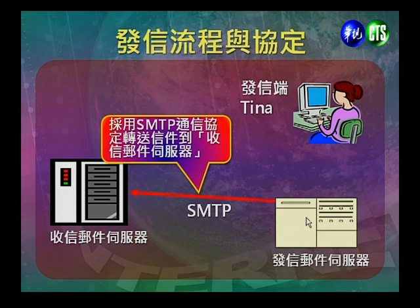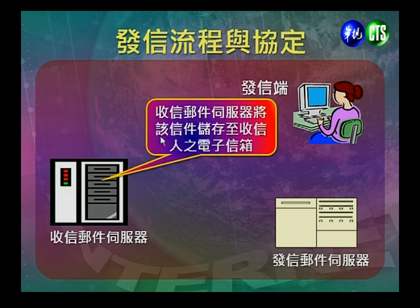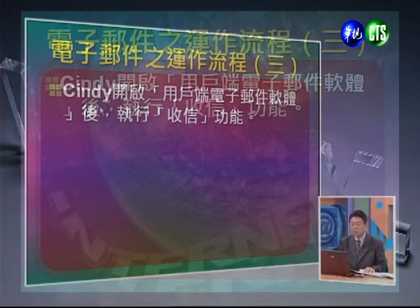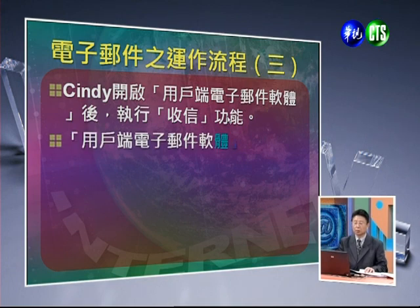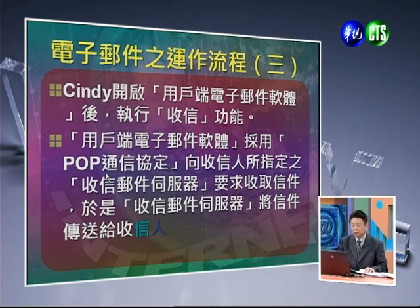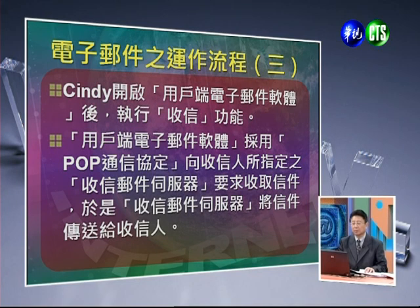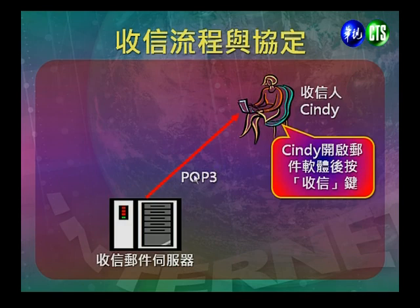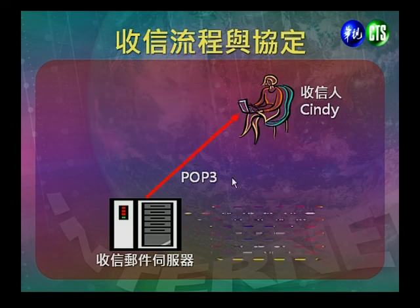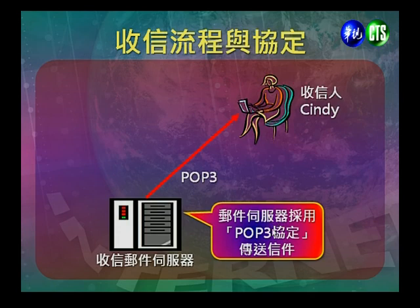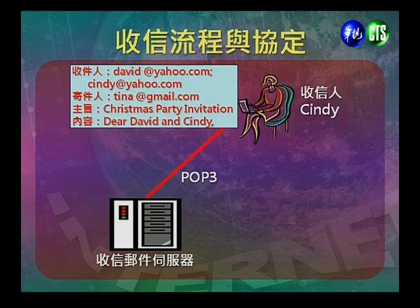Tina透过SMTP通信协定传送信件到发信邮件伺服器，发信邮件伺服器再透过SMTP把这封信传送到收件邮件伺服器，收件邮件伺服器把信件储存至David和Sandy的电子信箱。接着Sandy开启用户端电子邮件软体执行收信功能，用户端采用POP3通信协定向收信邮件伺服器要求收取信件，收信邮件伺服器透过POP3将信件传给Sandy，Sandy就收到这封信了。